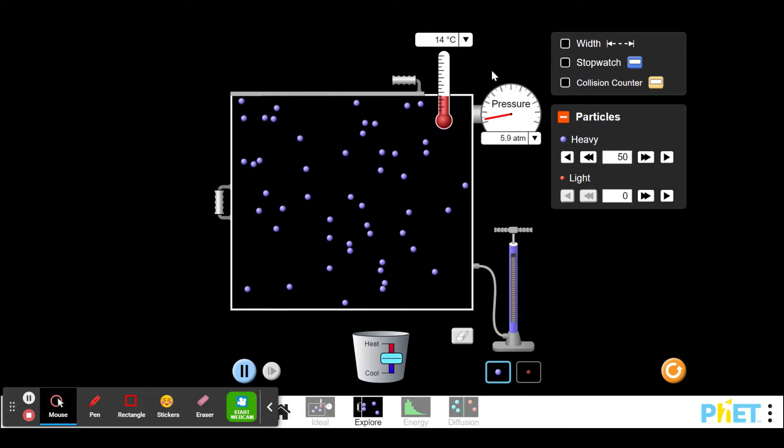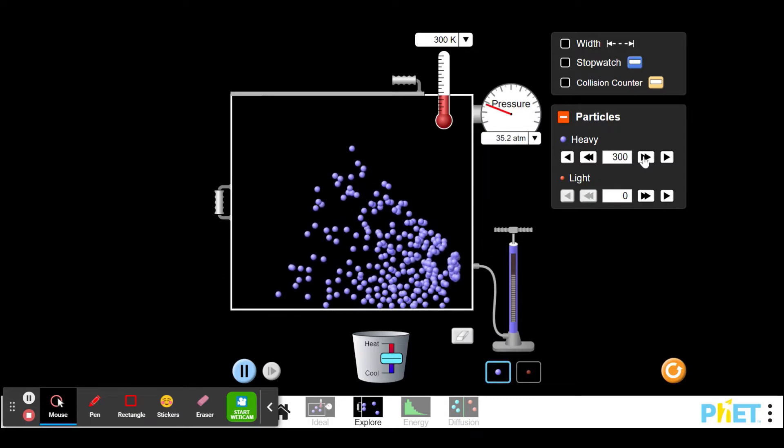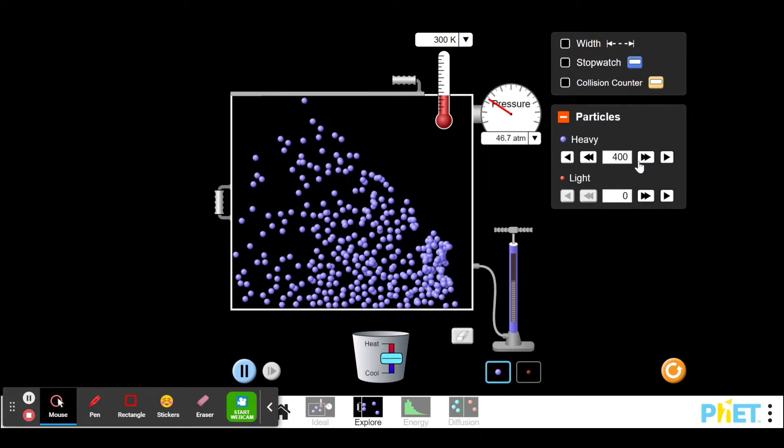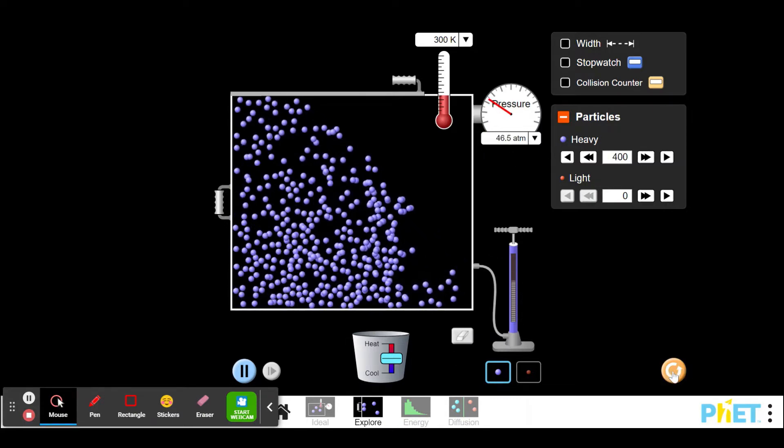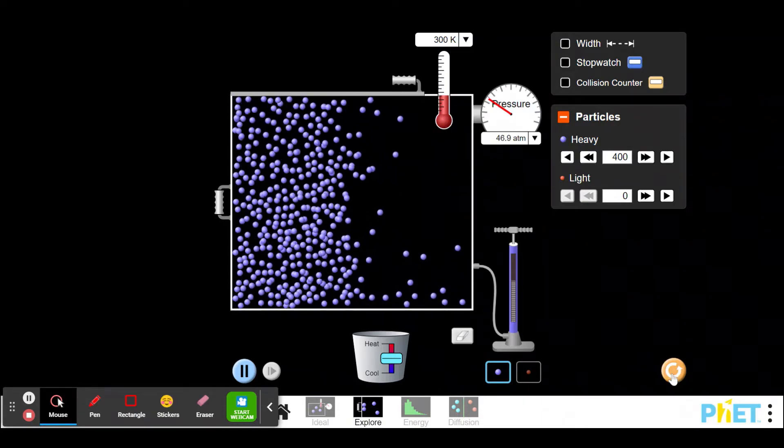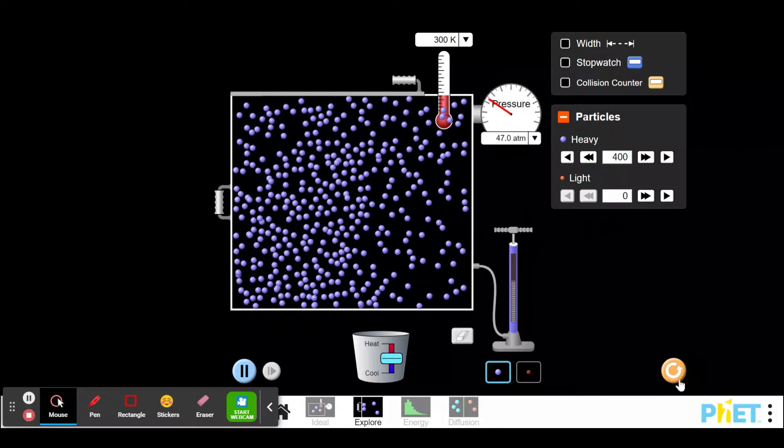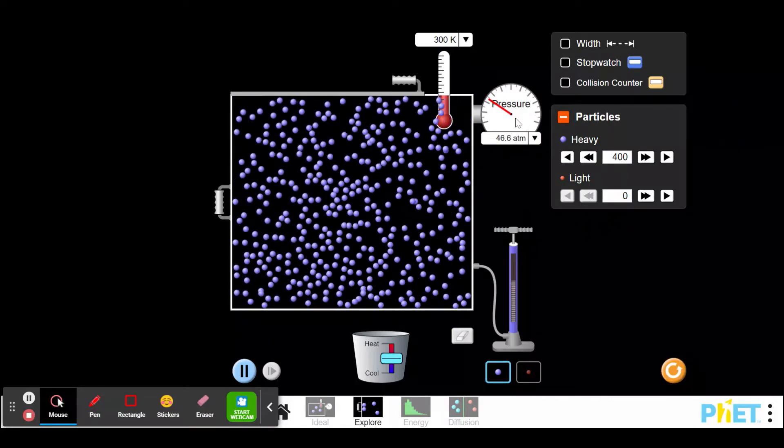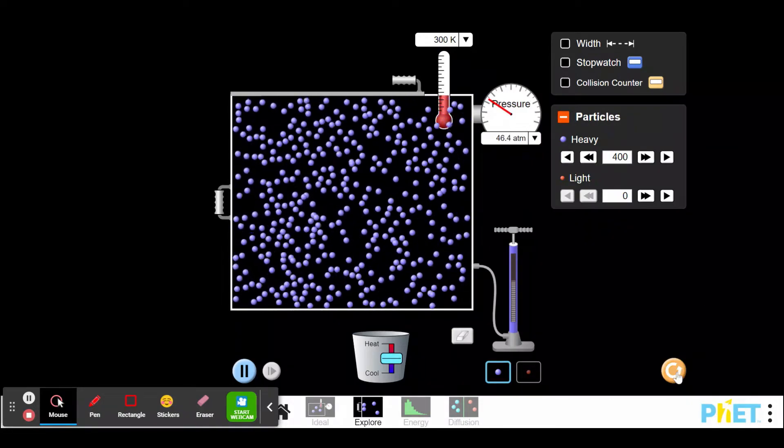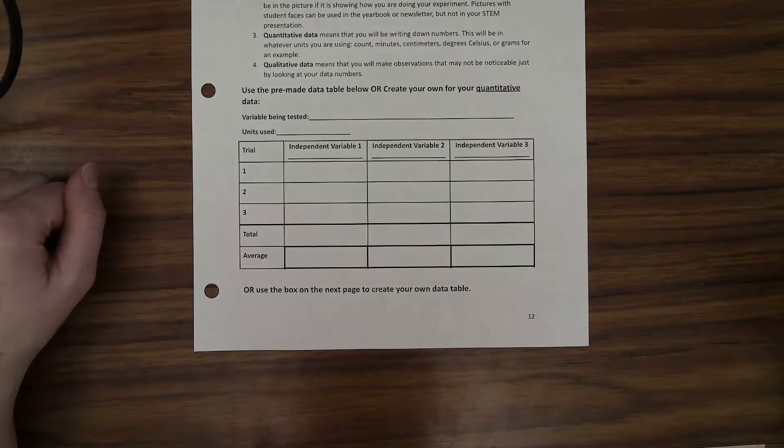The last thing that you can do is you can check the number of particles. So I can do 50, 100, 200, 150, 200. You can increase the number of particles and see how that affects the pressure. So those are your options that you can test. But either way, no matter what you're doing, you're always testing what is the pressure after you've changed those things for my gas experiment.